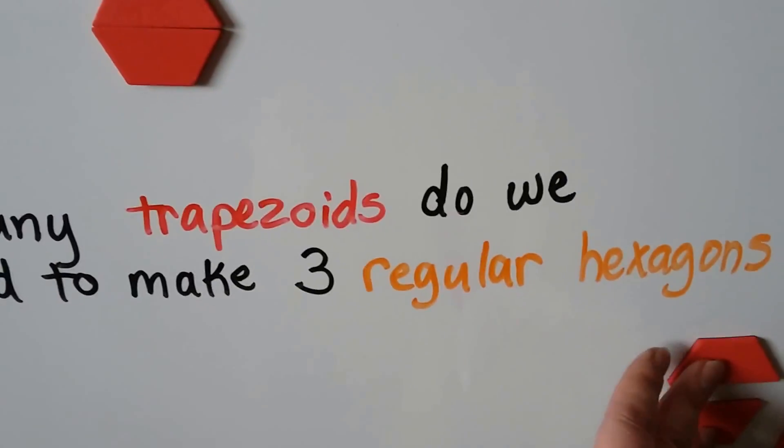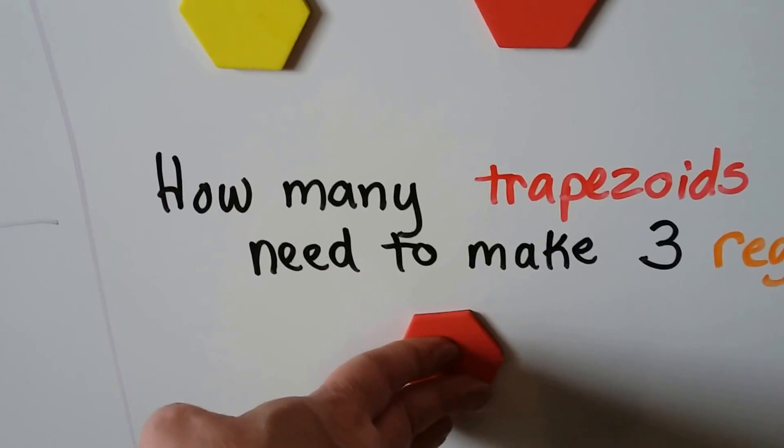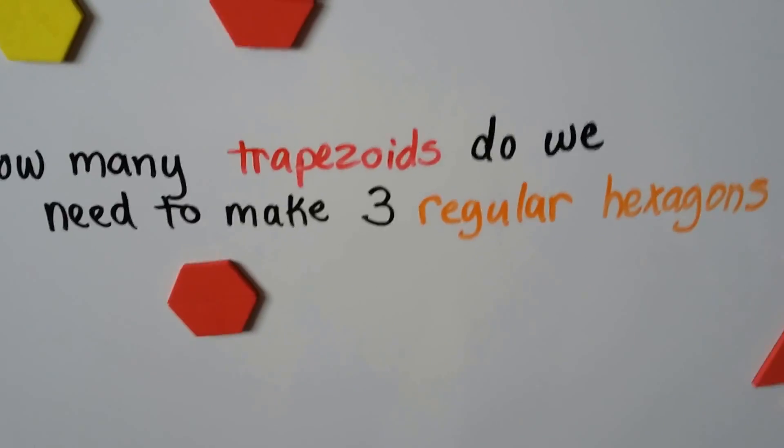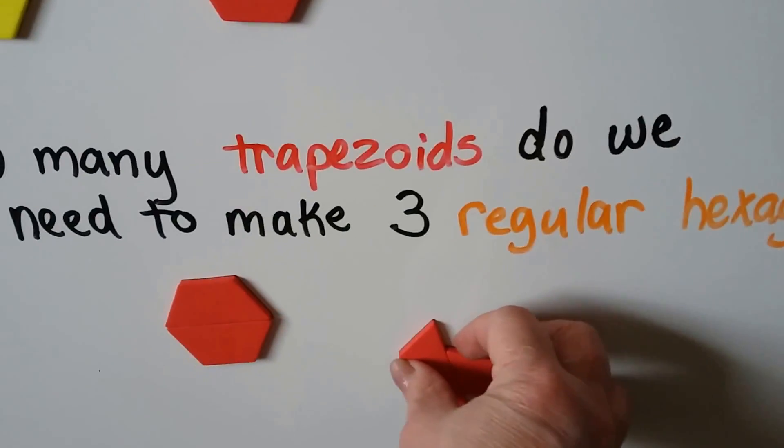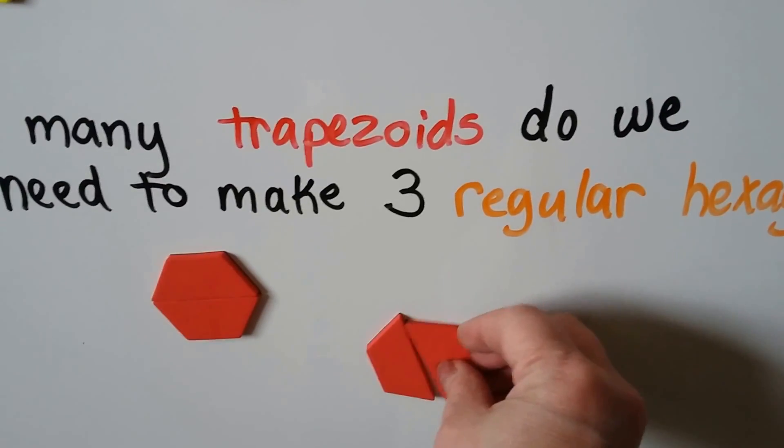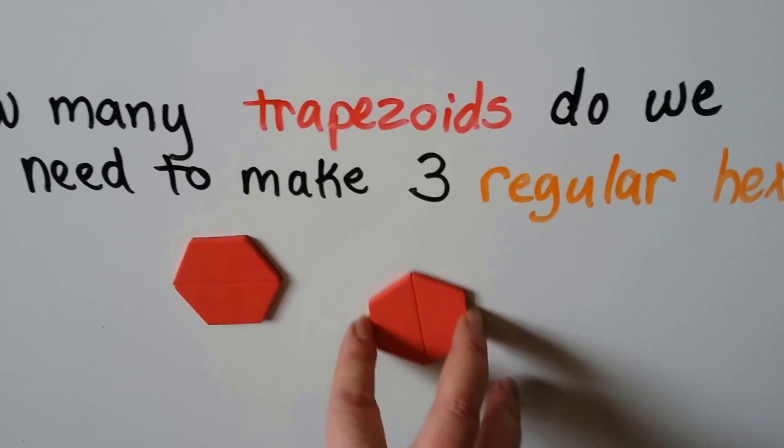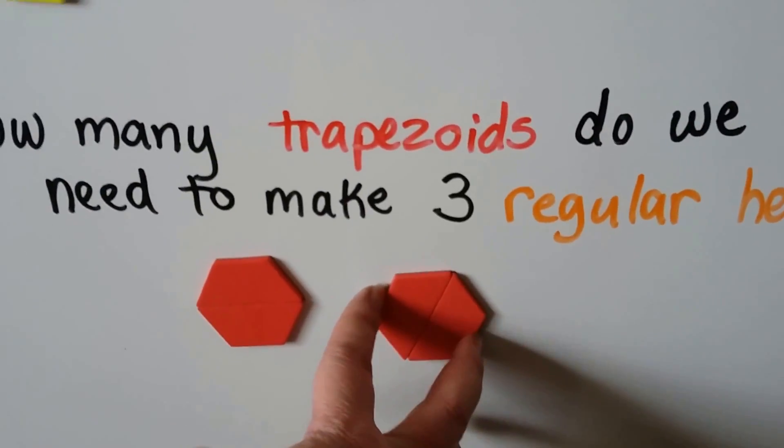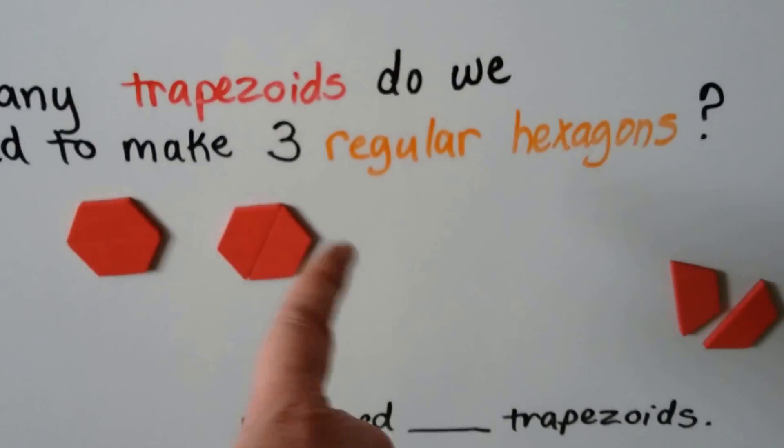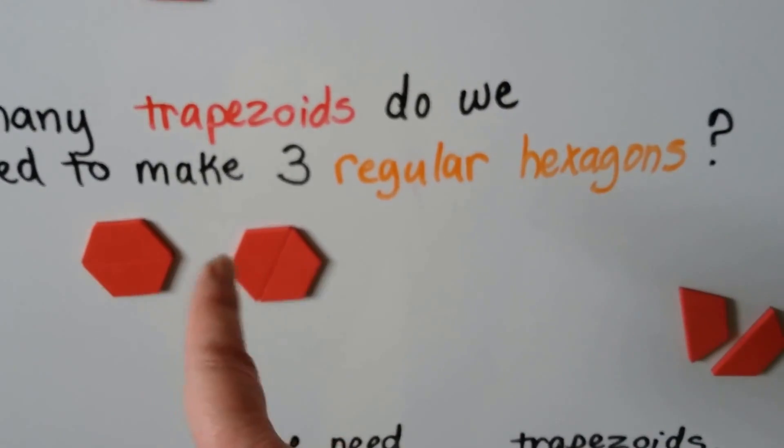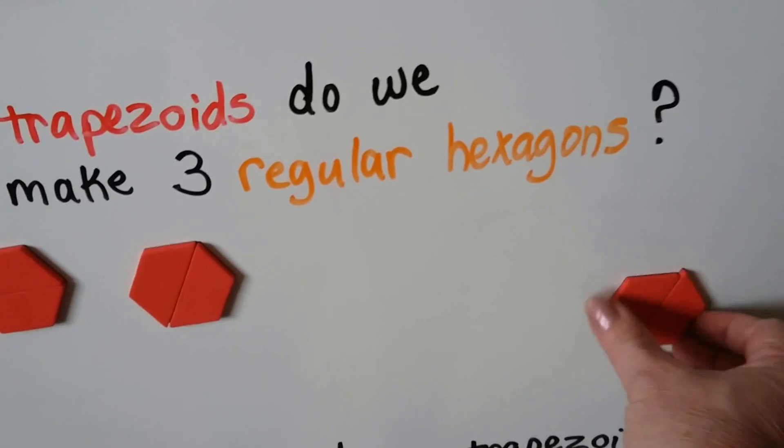We need two trapezoids to make one hexagon. Okay, so that's one. We need to build three, though. We can grab a couple more. Put them together. And they don't have to be sideways like that. They could be up and down like this, and it still makes a hexagon. See that? Or even a little slanted. That's two regular hexagons, but we need three regular hexagons. So we need to get a couple more.